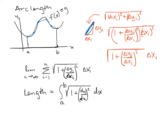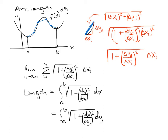If instead we factor out delta y, we get a very similar formula: the integral of the square root of 1 plus (dx/dy) squared, integrated with respect to y. You would use either formula depending on how your function is given — if given as a function of x use dy/dx and integrate with respect to x; if given as a function of y, use dx/dy and integrate with respect to y.